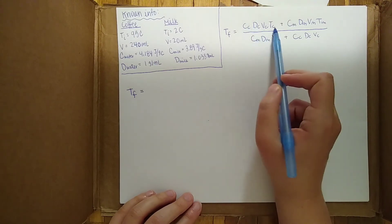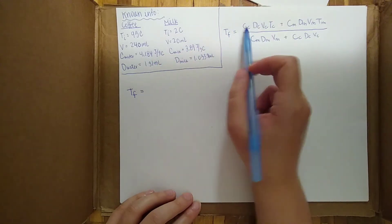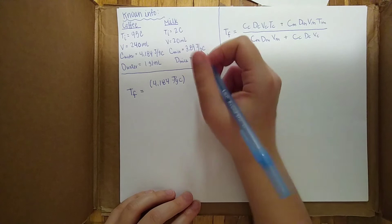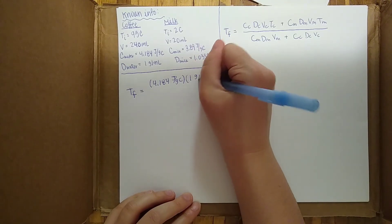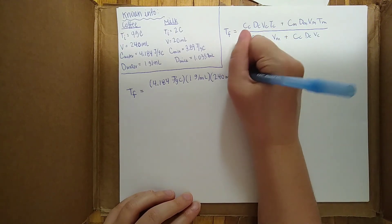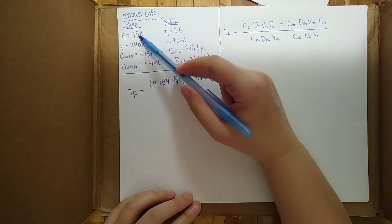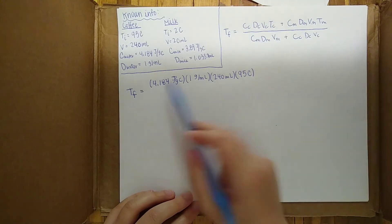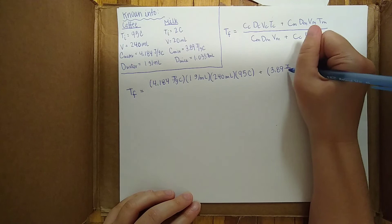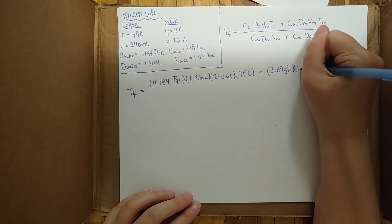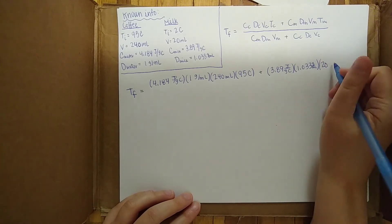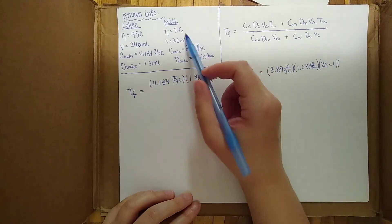Let's start with the coffee in the numerator. The specific heat of coffee, which we said is the specific heat of water, is 4.184 joules per gram per Celsius, times the density of 1 gram per milliliter, times the volume of 240 milliliters, times the initial temperature of the coffee, 95 degrees Celsius. Next, for the milk: the specific heat of milk is 3.89 joules per gram per Celsius, times the density 1.033 grams per milliliter, times the volume of 20 milliliters, times the initial temperature of the milk, 2 degrees Celsius.